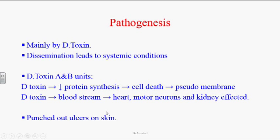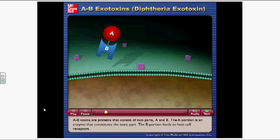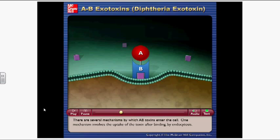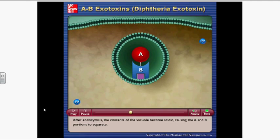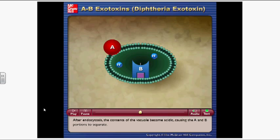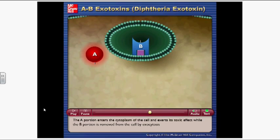When the organism is inoculated onto skin, it leads to chronic, prolonged non-healing punched-out ulcers. AB toxins consist of two parts: the A portion is an enzyme constituting the toxic part, and the B portion binds to host cell receptors. One mechanism of entry involves uptake by endocytosis. After endocytosis, the vacuole becomes acidic, causing A and B portions to separate. The A portion enters the cytoplasm and exerts its toxic effect, while the B portion is removed by exocytosis.